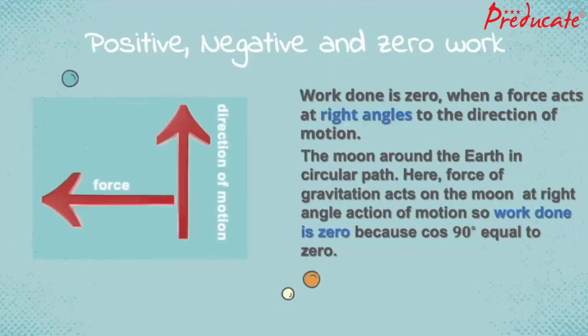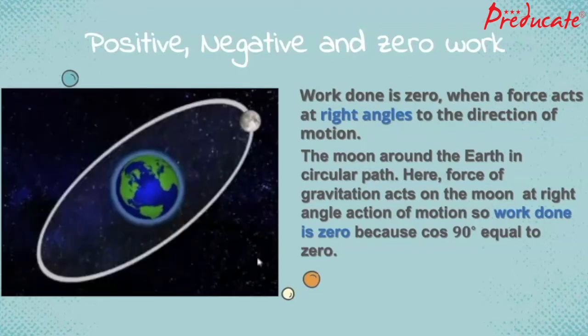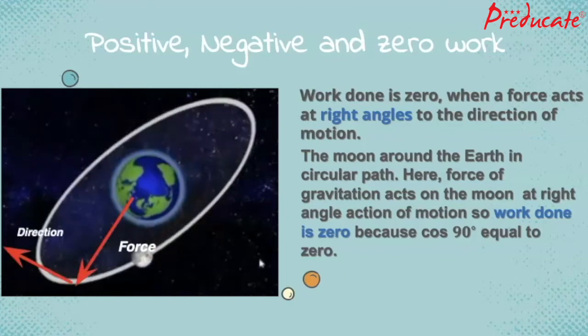Work done is zero when a force acts at right angles to the direction of motion. The moon around the earth in circular path. Here, force of gravitation acts on the moon at right angle to the direction of motion. So work done is zero because cos 90 degree is equal to zero.